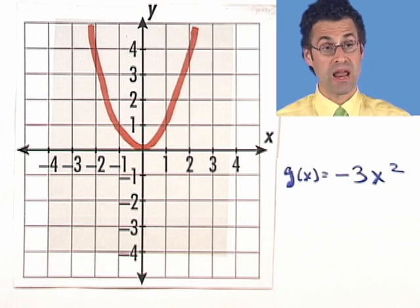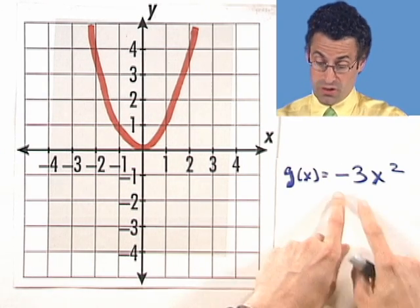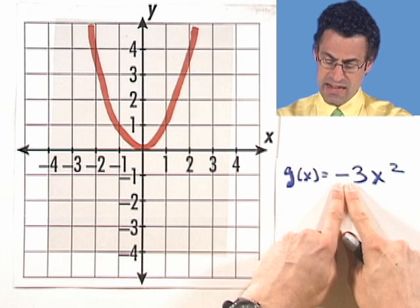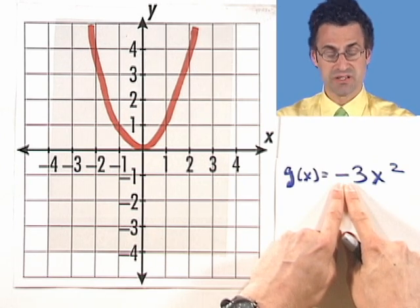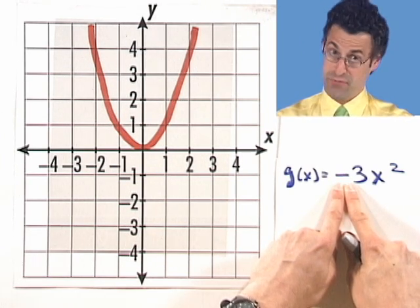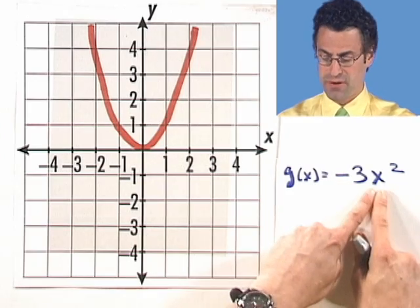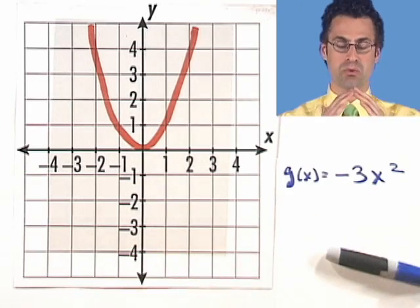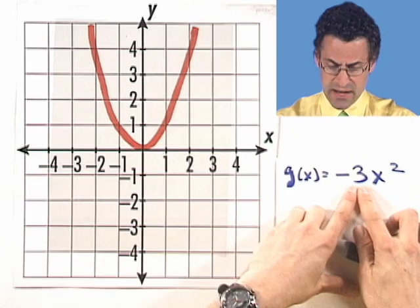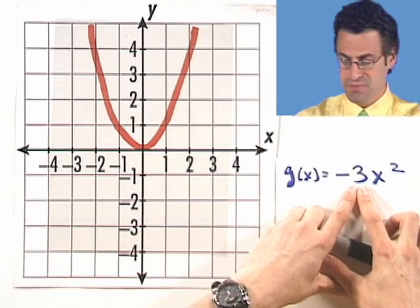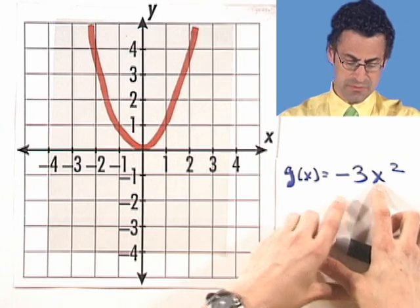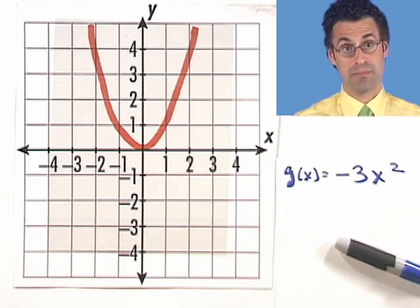Now what happens here? Well, first of all, that negative sign tells me that I'm going to produce a sad face parabola, because there's a negative in front of the x squared — that means this is going to open downward. And the 3 represents the vertical stretch, which means that these values are now going to be three times their original point.